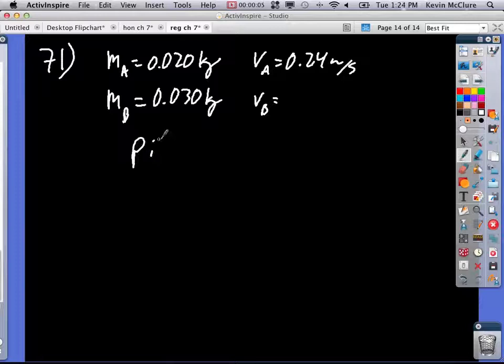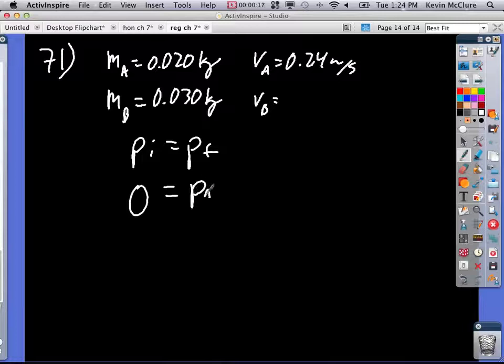This is just a conservation of momentum problem. PI equals PF, that's it. There's no PI because it's not moving, and PF is going to be the momentum of A plus the momentum of B.